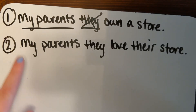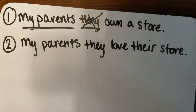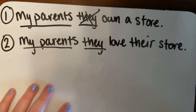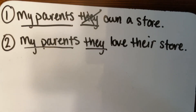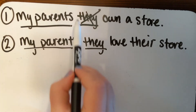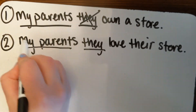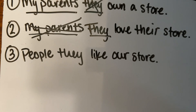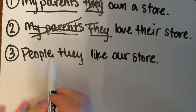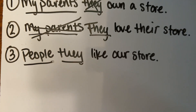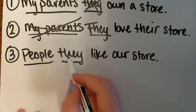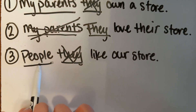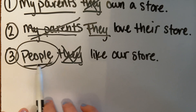If our next sentence right after this one was 'My parents, they love their store,' we have to decide which noun or pronoun to get rid of — either 'parents' or 'they.' Since we're just talking about my parents, we can get rid of 'my parents' and just start with 'they.' Then for 'People, they like our store,' we should take out 'they' because we're talking about a new noun. So: 'People like our store.'